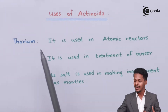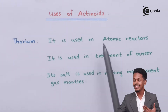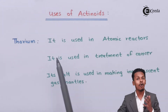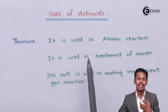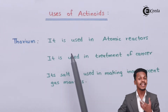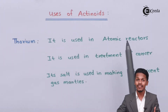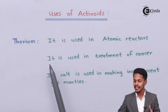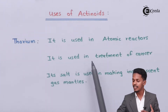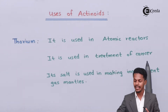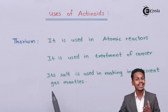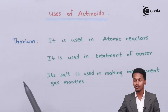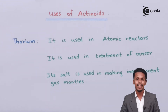For example, thorium is used in atomic reactors because these F-block elements are very much radioactive and have certain properties used in radioactive analysis. It is also used in the treatment of cancer. Its salt is used in making incandescent gas mantles. So these are the uses of thorium.